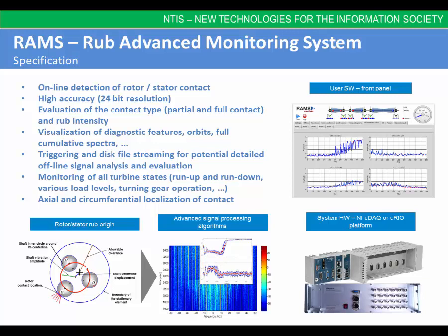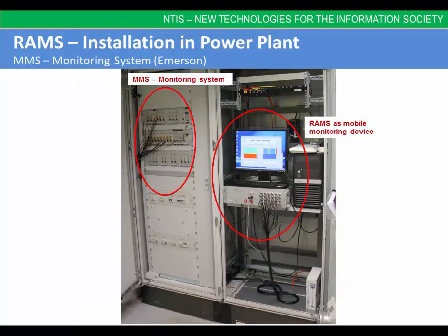The RAMS localization function is capable of both axial and circumferential determination of the contact point. The RAMS uses existing sensors which are the standard equipment of the turbine monitoring system. In most cases the buffered outputs from the installed turbine monitoring system are used as RAMS inputs. For each measurement plane a couple of relative shaft vibration sensors and one absolute bearing vibration sensor is used.